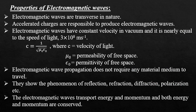Properties of electromagnetic waves. Electromagnetic waves are transverse in nature. That is, the magnetic field and the electric field oscillate perpendicular to the direction of propagation.